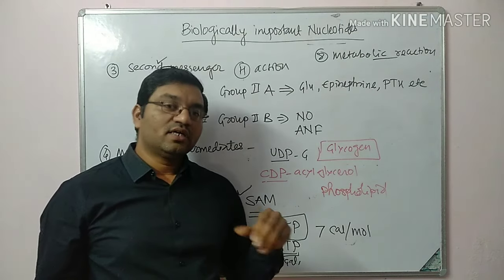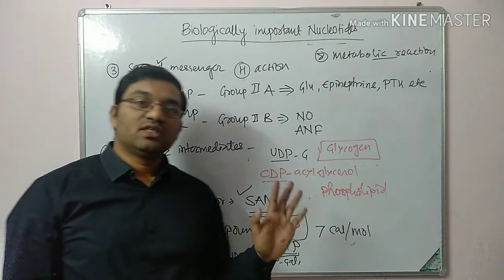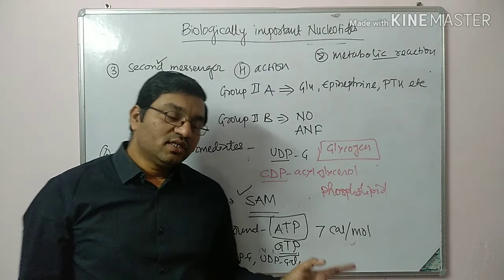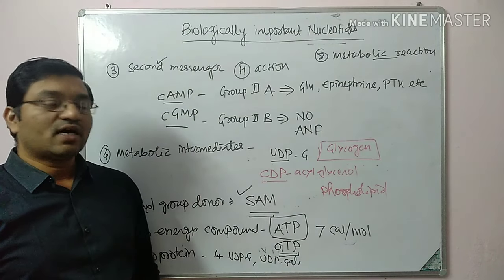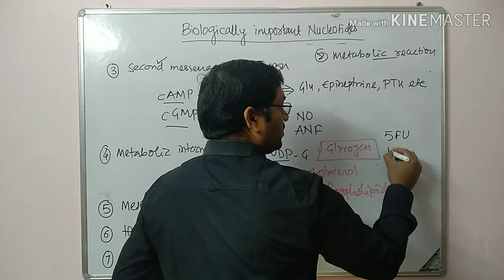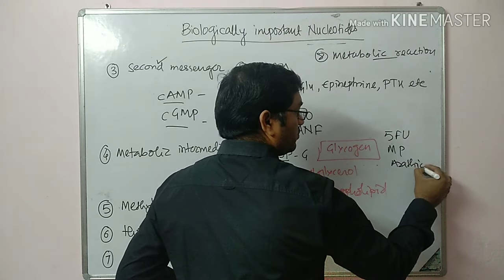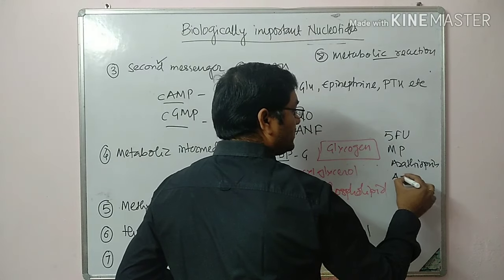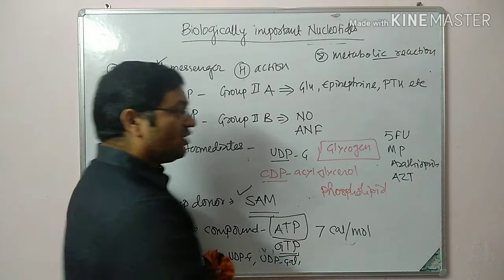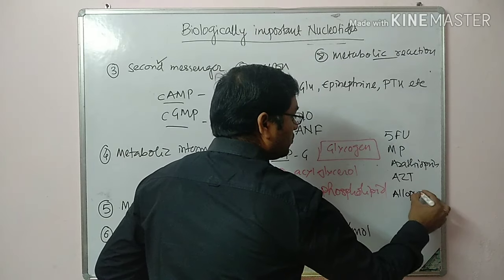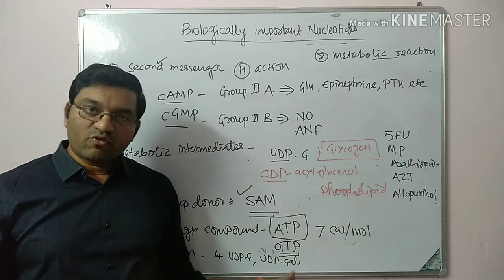Synthetic nucleotides are also an important short note topic. They are used in the treatment of cancer, AIDS, and gout. Some synthetic nucleotides include 5-fluorouracil, mercaptopurine, azathioprine, AZT (azidothymidine), dideoxyadenosine, and allopurinol. These are some important nucleotides and their functions. Keep watching, thank you.